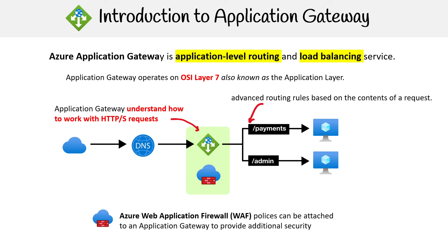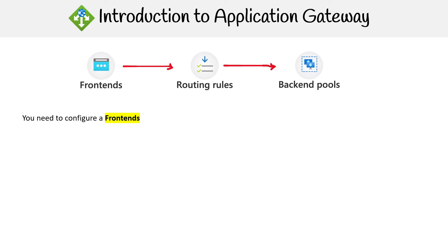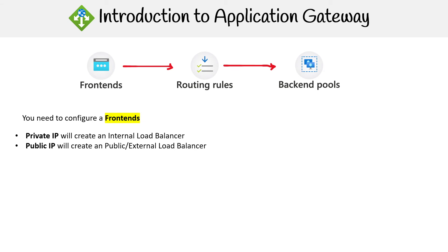It's all about the application, which has to do with HTTP requests. To configure this, you need to set up frontends, routing rules, and backend pools. There are two configurations for the frontend: you can have a private IP, which makes it an internal load balancer, or a public IP, which makes it a public or external load balancer.